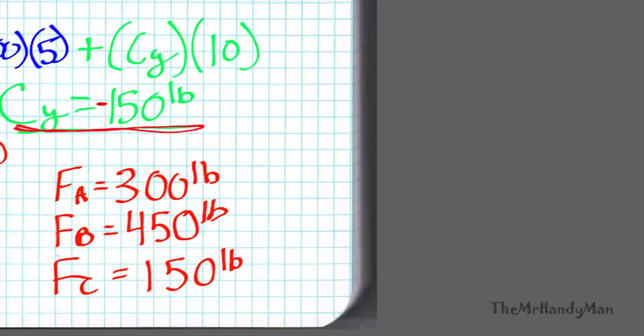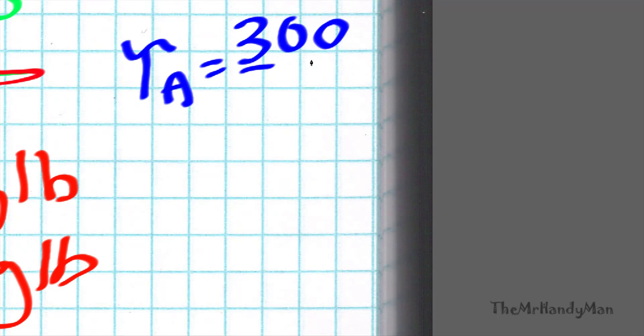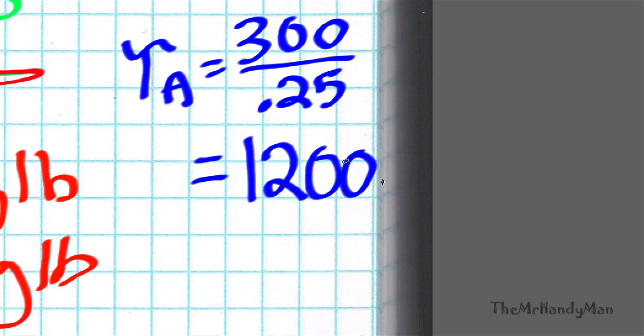So I'm going to zoom in again to our area. I already have the numbers written down. So τA is equal to 300 over 0.25 inches squared. That's the area of the pin at that point, which actually equals 1200 psi.